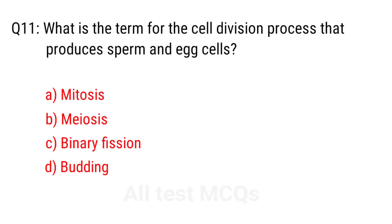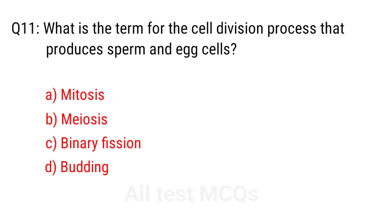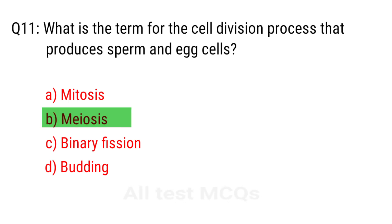Q11. What is the term for the cell division process that produces sperm and egg cells? The right answer is option B: Meiosis.